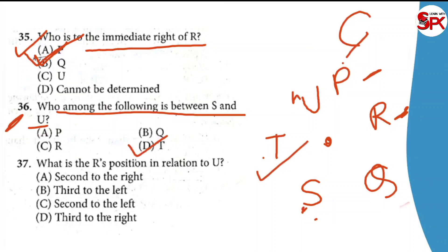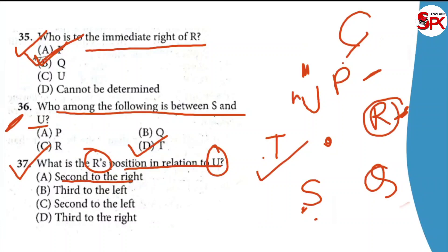Our last question: what is the position of R in relation to U? So R and U — what is R's position? I will show you — where is U and where is R? Look — U is here and R is here. From U, R is to the second left. So second to the left — C is the answer. Your right answer is C.